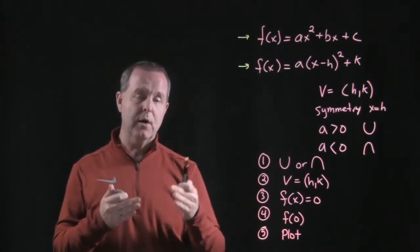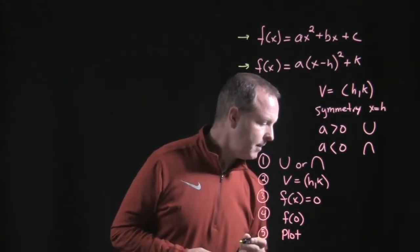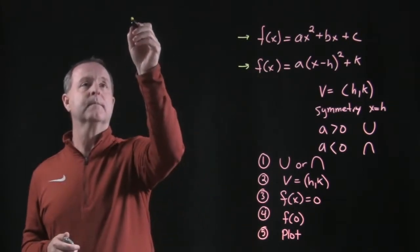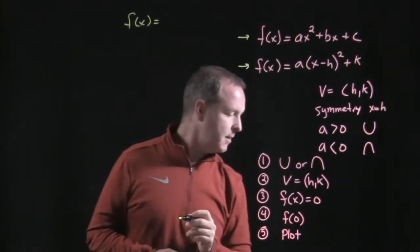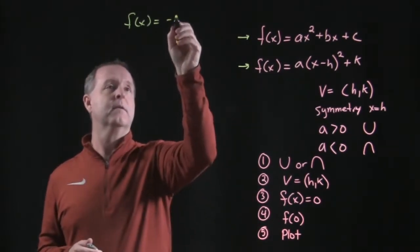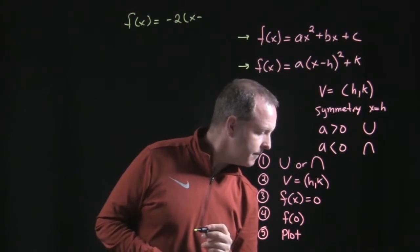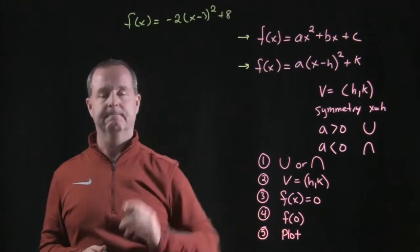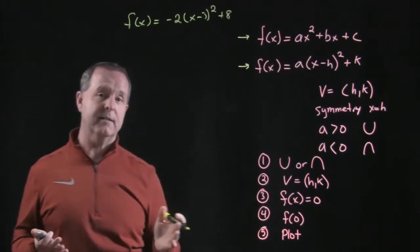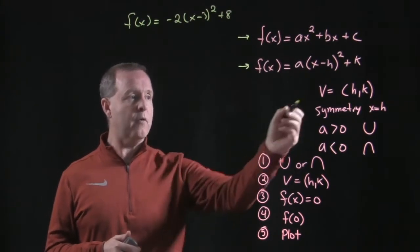So I have five steps for us that we're going to work through when we're trying to graph a quadratic equation that's in this particular form. So let's look at f(x) equals minus 2(x minus 3) squared plus 8. So from that, can we get a rough idea of what its graph looks like?